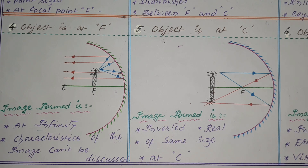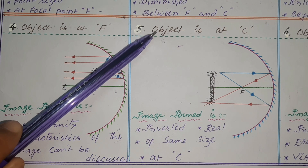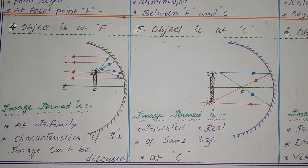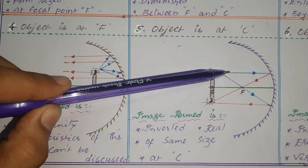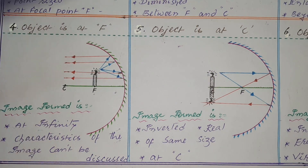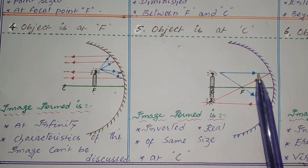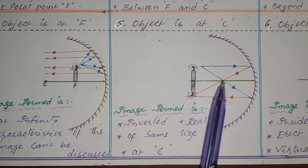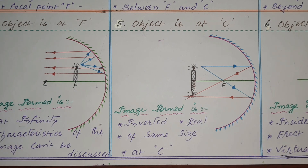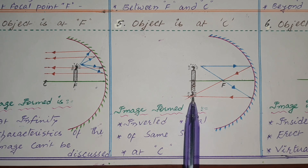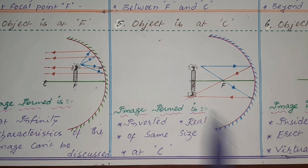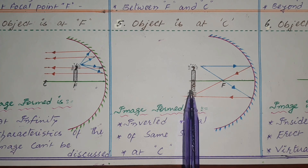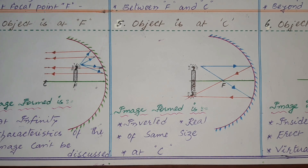In the fifth position, the object is kept at the center of curvature C. We observe image formation using two simple light rays. The first light ray, parallel to the principal axis, travels towards the mirror, reflects back, and passes through the focal point. The next light ray travels towards the focal point, reaches the mirror, reflects back, and becomes parallel to the principal axis. The two reflected rays meet at a point — the object is at C and the image is also formed at C.